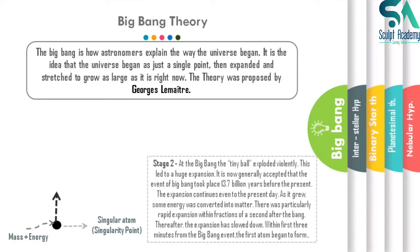At the Big Bang, the tiny ball exploded violently, leading to a huge expansion. It is now generally accepted that the Big Bang took place 13.7 billion years ago. The expansion continues even to the present day. As the universe grew, some energy was converted into matter — helium was made from energy radiations. There was particularly rapid expansion within a fraction of a second after the Big Bang, after which the expansion slowed down. Within the first three minutes, the first elements began to form.